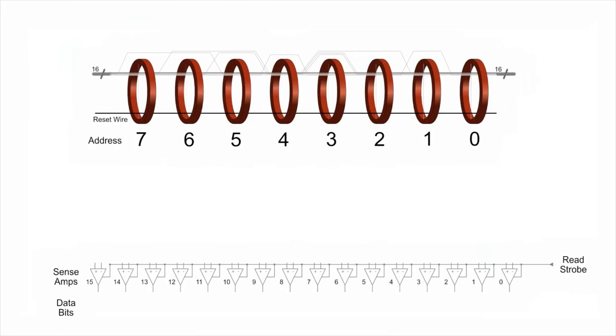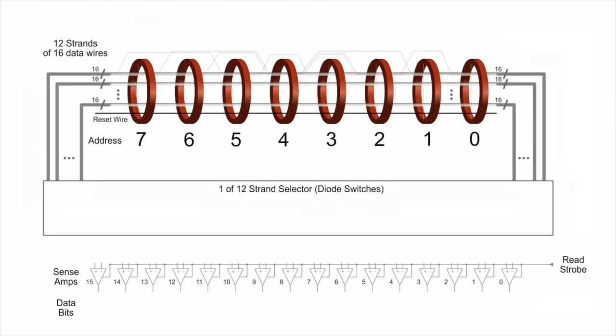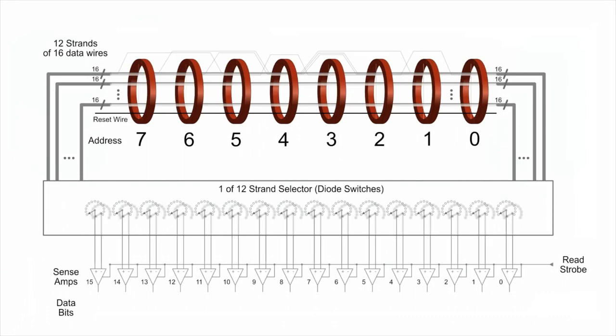Now let's add another strand of 16 wires. Actually, a bunch more, we'll add 12. I can't draw them all, but you get the picture. Now let's use an electronic switch between the 16 sense amplifiers and our strands so we can connect the sense amps to any strand. Depending on the position of the switch, we can now choose to read one of the 12 strands.